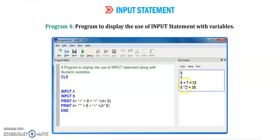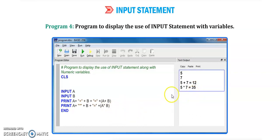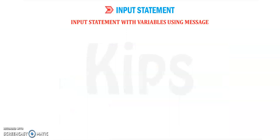While running the program, if we give value 5 for variable a and 7 for b, this line will execute and output 'five plus seven equals twelve', and this line will execute 'five into seven equals thirty-five'. If we run the program again we can give other values and it will add and multiply them. This is the use and difference between print and input statements.